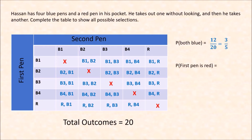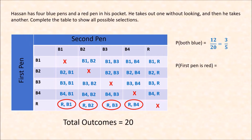What is the probability that he first got a red pen? In this case, the outcomes are R, B1; R, B2; R, B3; and R, B4. That's 4 possibilities out of 20, or 1 fifth.